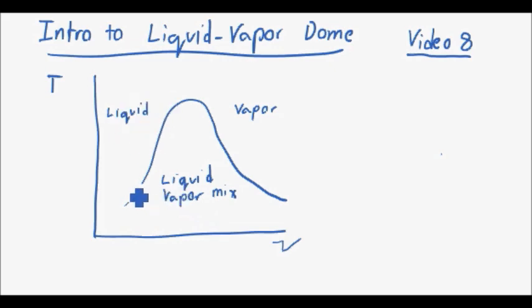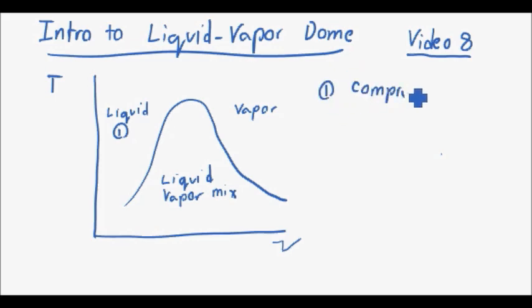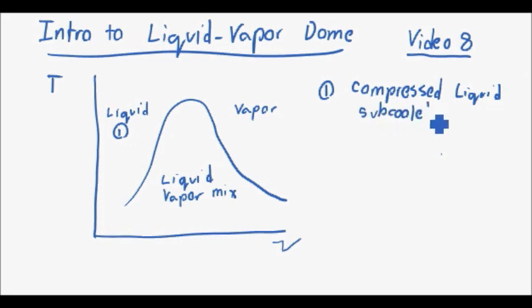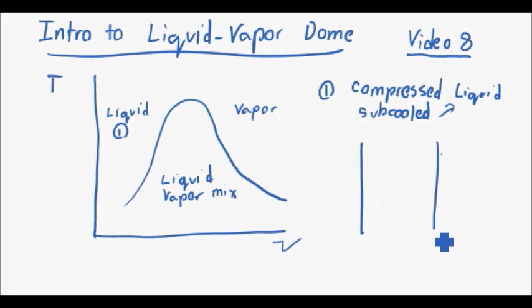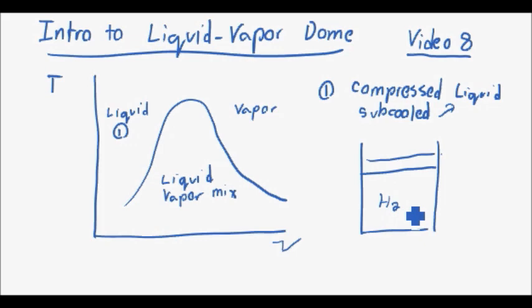On the left-hand side, if you're away from the vapor dome, let's call that point number one — you have what is called a compressed liquid, and this is sometimes called a subcooled liquid as well. To describe what a compressed or subcooled liquid is, let's look at a container with a piston on it with H₂O inside.